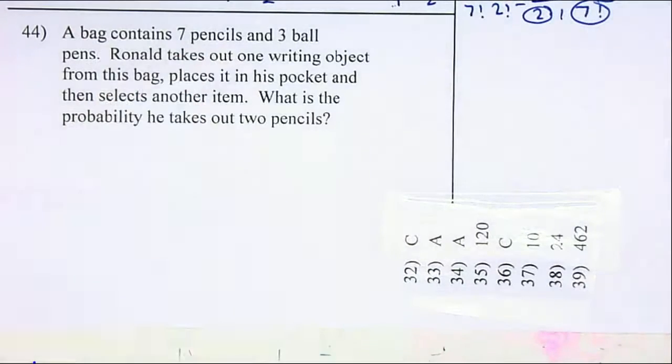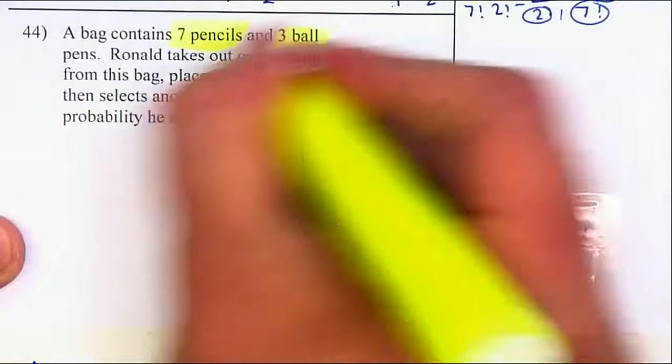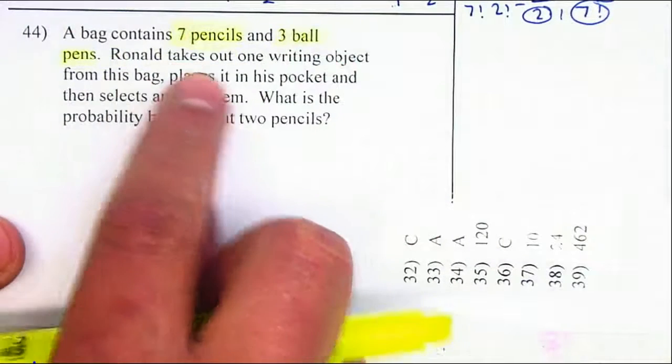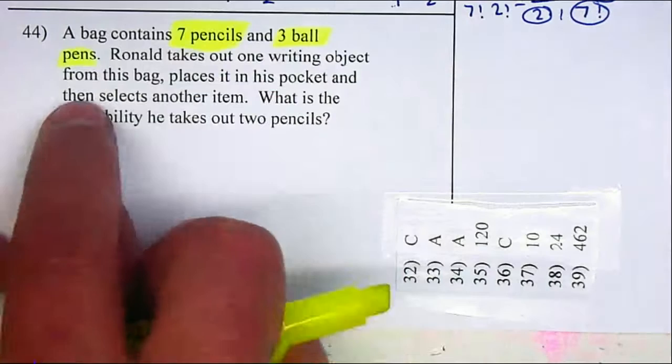A bag contains seven pencils and three ball pens. Ronald takes one writing object from this bag, places it in his pocket, and then selects another.